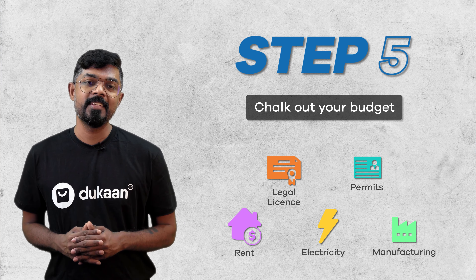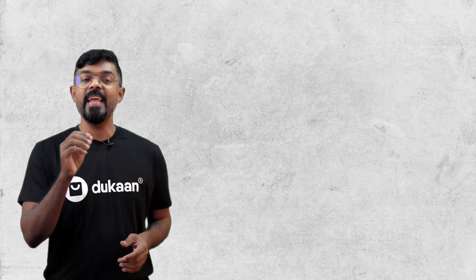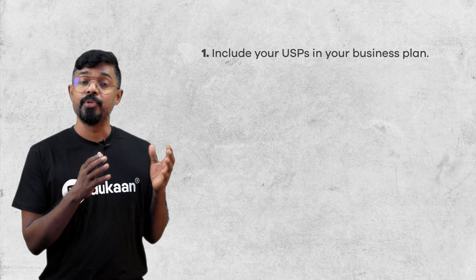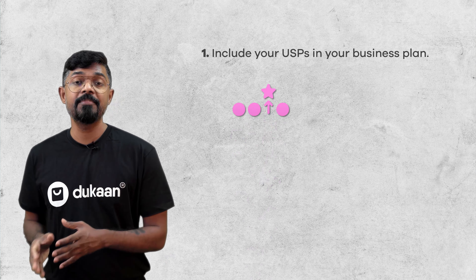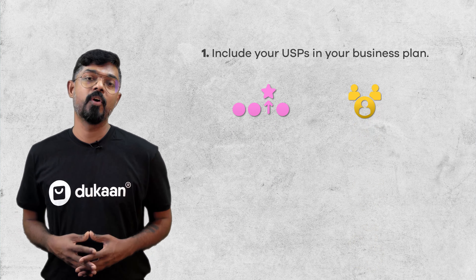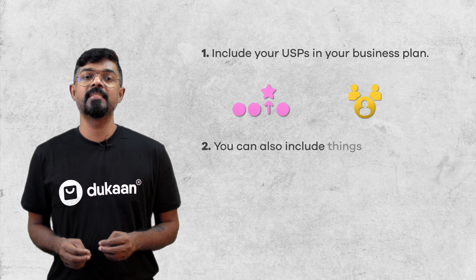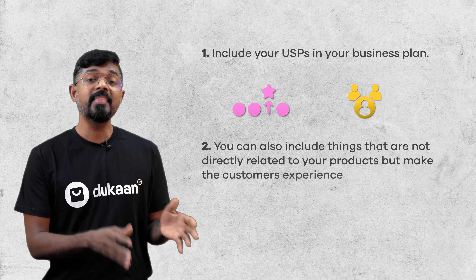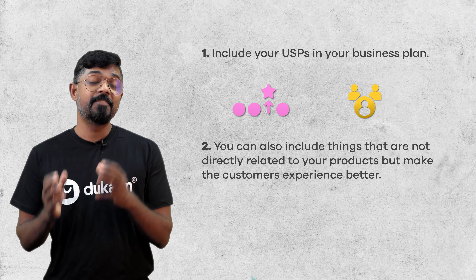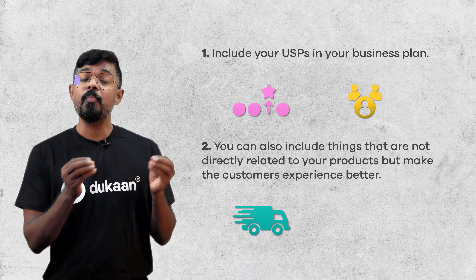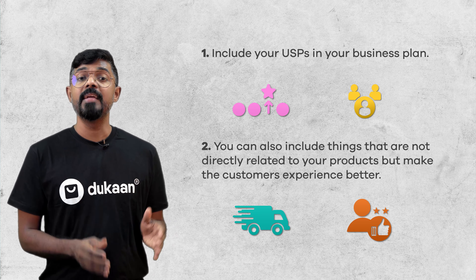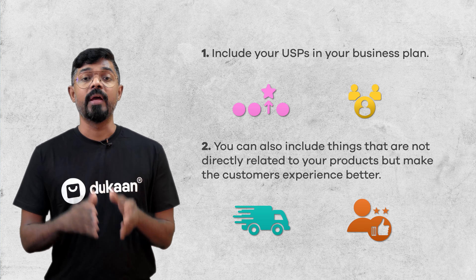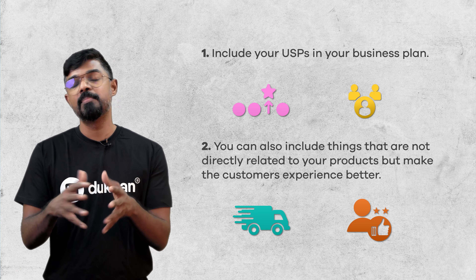Sounds simple enough, right? Let me give you a bonus tip as well. Include your USPs in your business plan. You should always mention what makes you different and why you are better than your competitors. You can also include things that are not directly related to your products but make the customer's experience better — like fast shipping or better customer service. Keep in mind to include both perspectives, yours and your audience's, while you are writing the business plan.